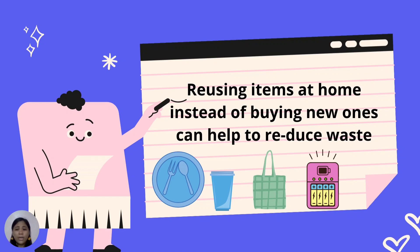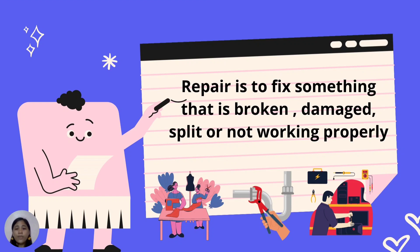Reusing items at home instead of buying new ones can help reduce waste. In the kitchen, it is better to replace single-use eating utensils like styrofoam cups, water bottles, and paper plates with compostable or reusable alternatives. You can also bring your own bag in grocery stores. Durable plastic containers are very practical. Instead of using disposable batteries in appliances or gadgets, rechargeable batteries are recommended. Repair means to fix something that is broken, damaged, split, or not working properly. Examples of repairs you can do at home include sewing holes in the pocket of your pants, and seeking help from elders to repair leaks in faucets, electrical appliances, and cracks in the walls.